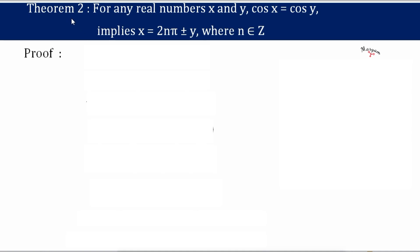Hello students. In this video let's discuss Theorem 2 of the trigonometry chapter: for any real numbers x and y, cos x equals cos y implies x equals 2nπ ± y, where n belongs to integers. We need to prove that for cos x equals cos y, x equals 2nπ ± y. So we start by taking cos x equals cos y.